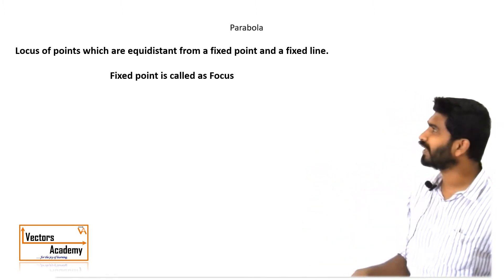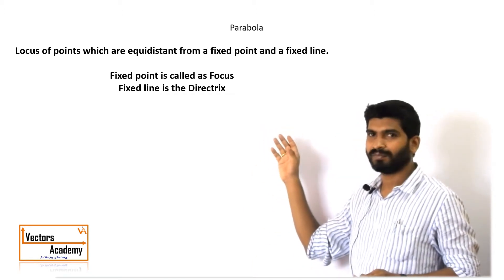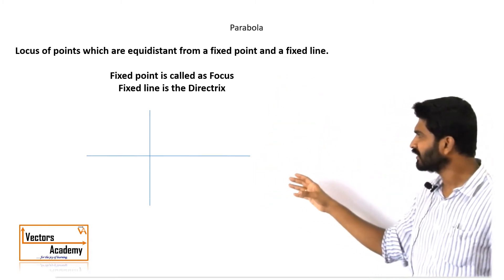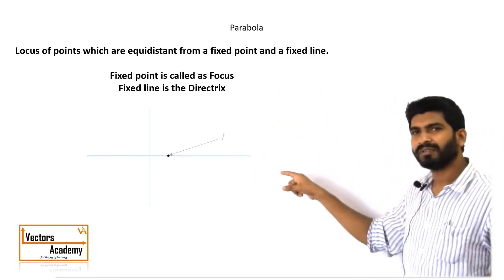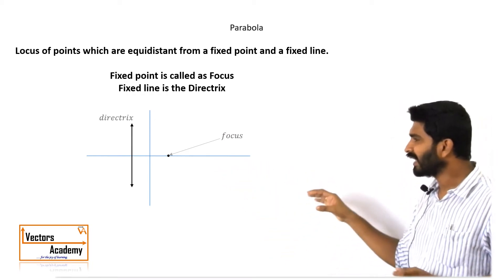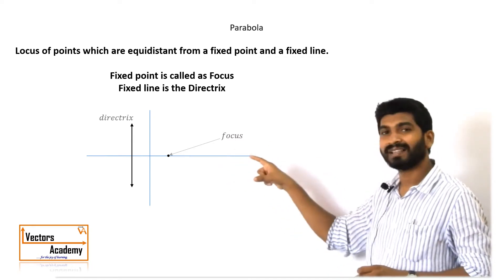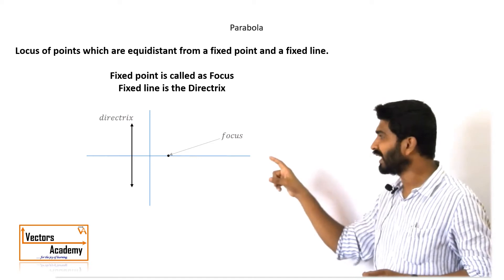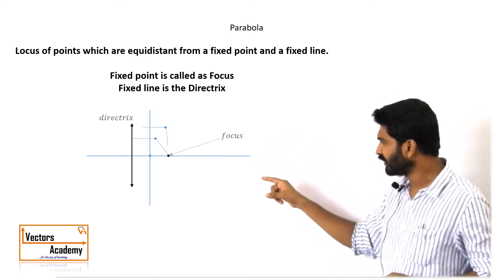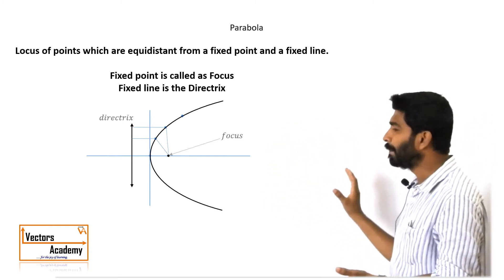The fixed point is called the focus and the fixed line is called the directrix. To understand this definition: if I take the x-axis and the y-axis, I take a fixed point called the focus and a fixed line called the directrix. I then collect all points that are at the same distance from the line as well as the fixed point. If I take a few such points and join them all, the shape I get is a parabola.